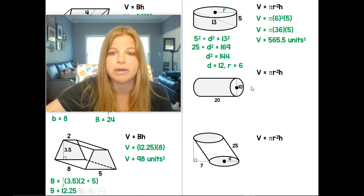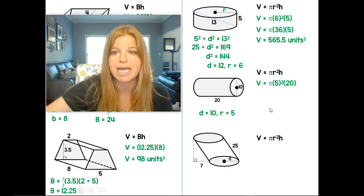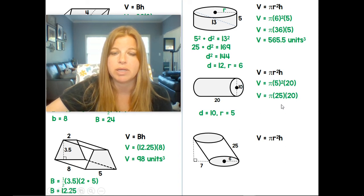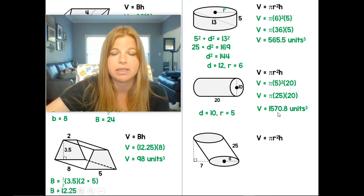Here, pi r squared h. So I'm given my height of 20. My radius here would have to be 5. The diameter is 10. So pi times 5 squared times my height of 20. Well, again, calculator pretty much does the work for us. We get 1570.8 units cubed.